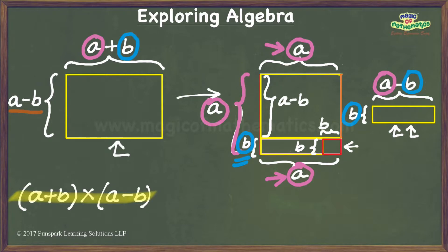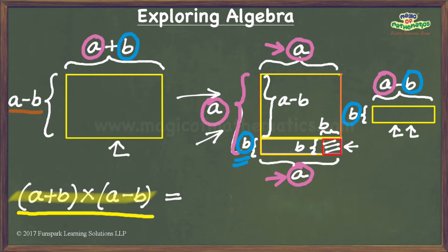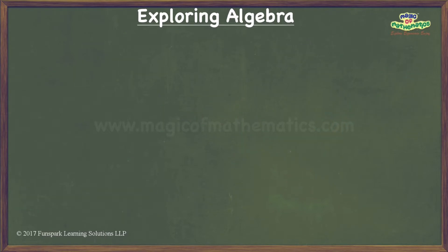We have taken our rectangular sheet and managed to fit it into our square outline, leaving out just a square bit. Hence, the area of our rectangular sheet which is a plus b times a minus b square units should equal the area of the original square with sides measuring a units, that is a squared, minus the area of the left out square bit with sides measuring b units, that is b squared square units. And this is the expansion of a plus b times a minus b. If you found this video useful, I would appreciate a like. Please subscribe to my channel to be notified as and when I publish more such videos.